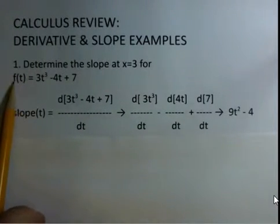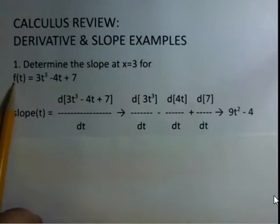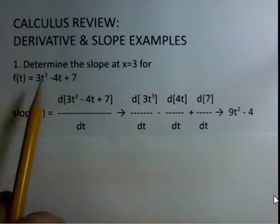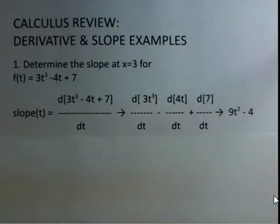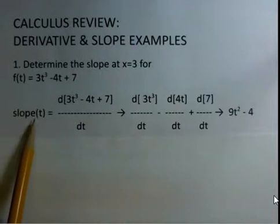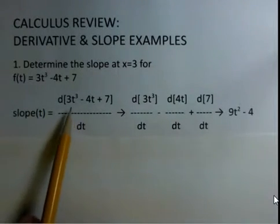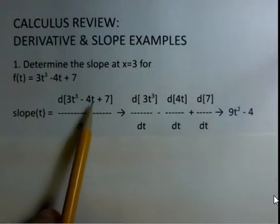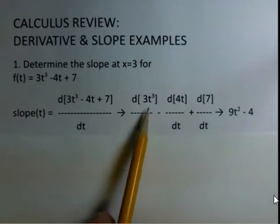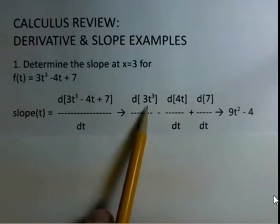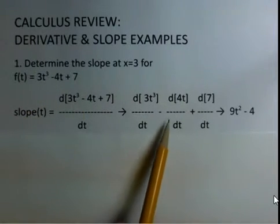Here's a function of time, f of t. This is not f times t, this is function notation, a function with parameter t, and the definition of the function is 3t³ - 4t + 7. The slope will be the derivative of this function. It's a polynomial, so we're going to take the derivative of each term.